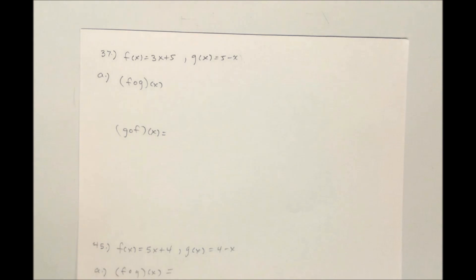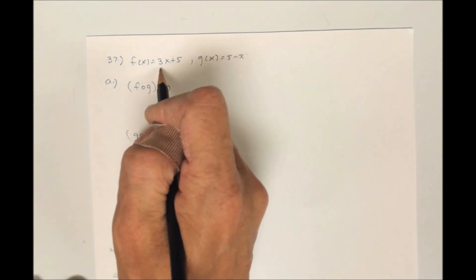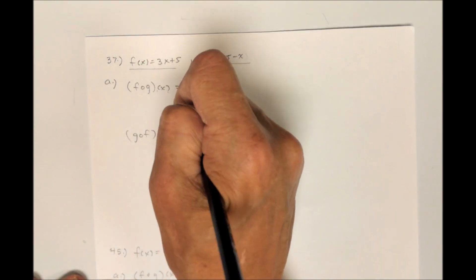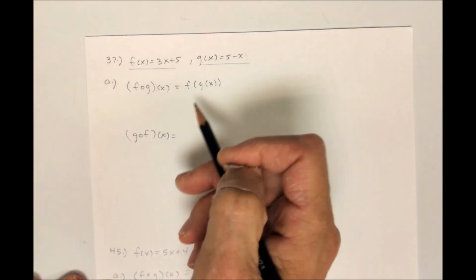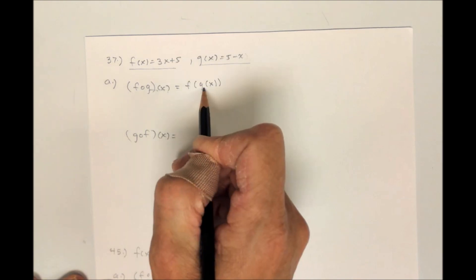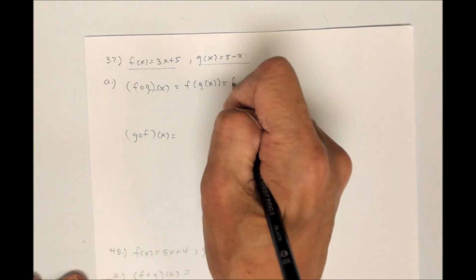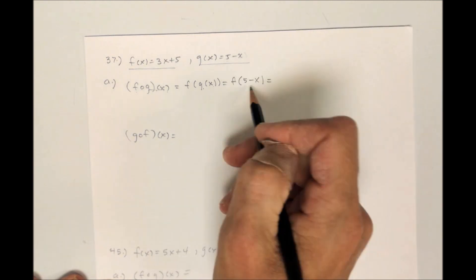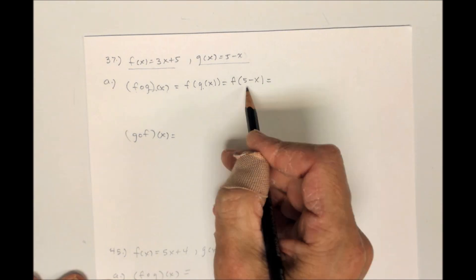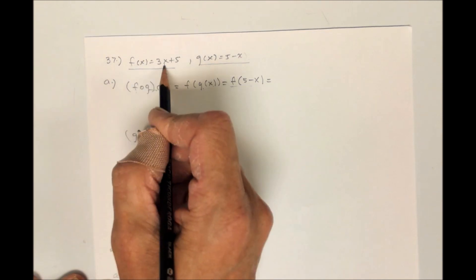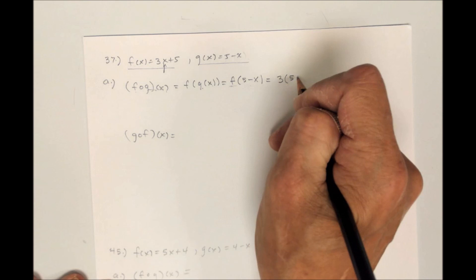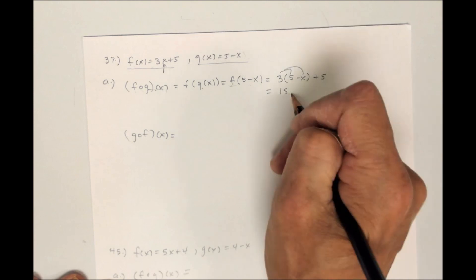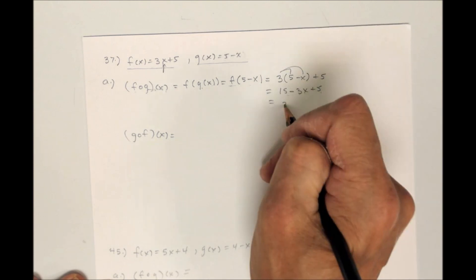Here's another one with the same kind of directions — problem 37. Here's f of x and g of x. F circle g of x is f of g of x. The one closest to x is the inside function. G of x is 5 minus x, so this is f of 5 minus x, and 5 minus x gets plugged in for the variable in the rule for f. So I'm going to have 3 times the quantity 5 minus x plus 5, which gives 15 minus 3x plus 5, which is 20 minus 3x.